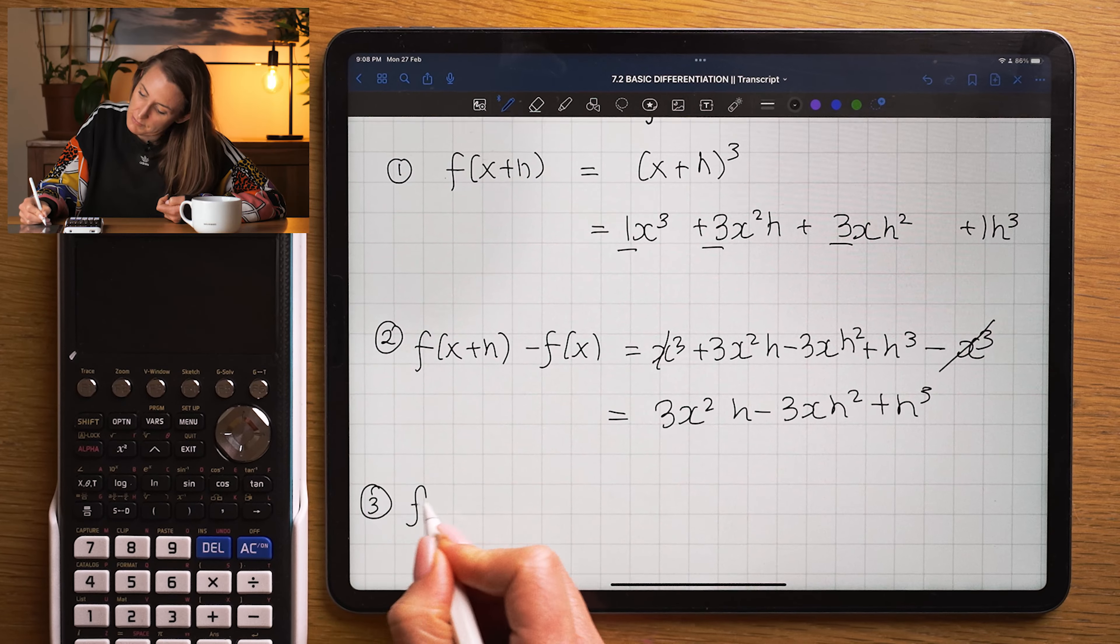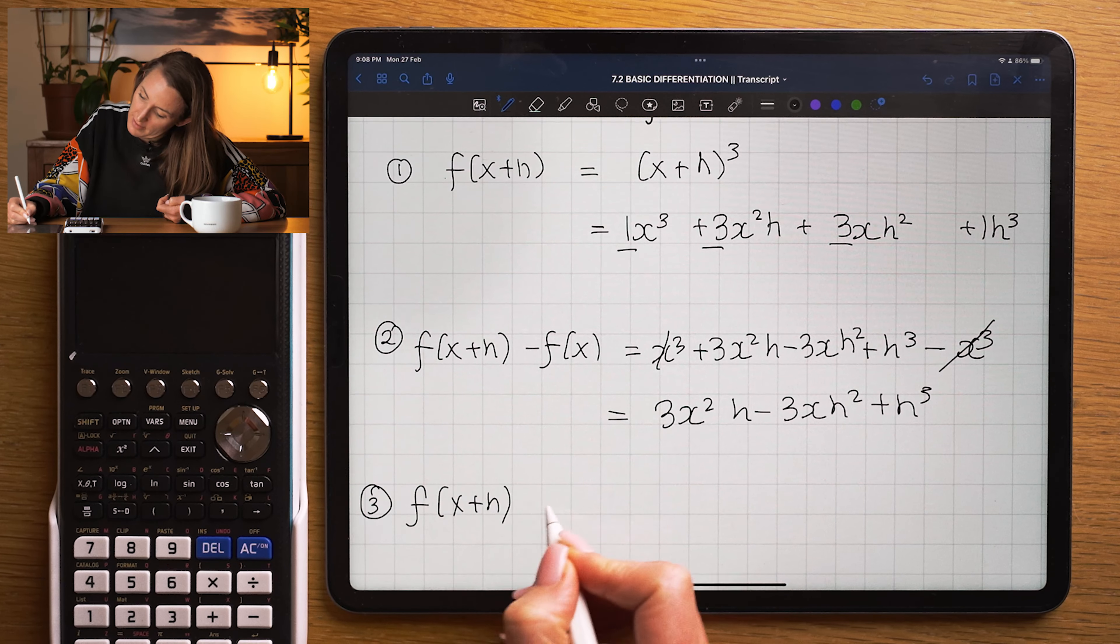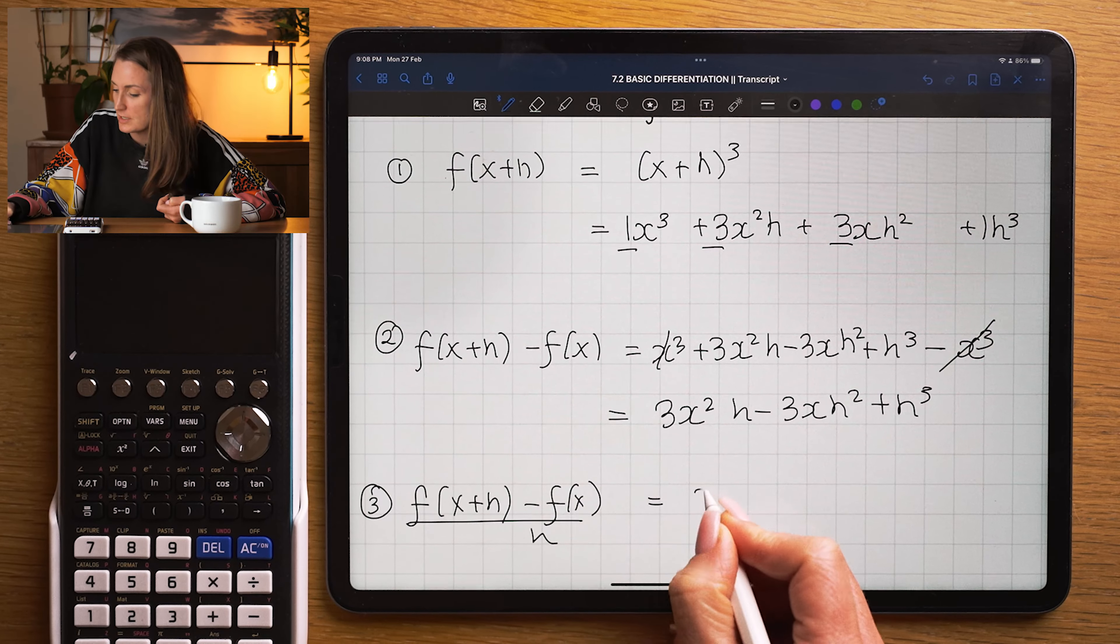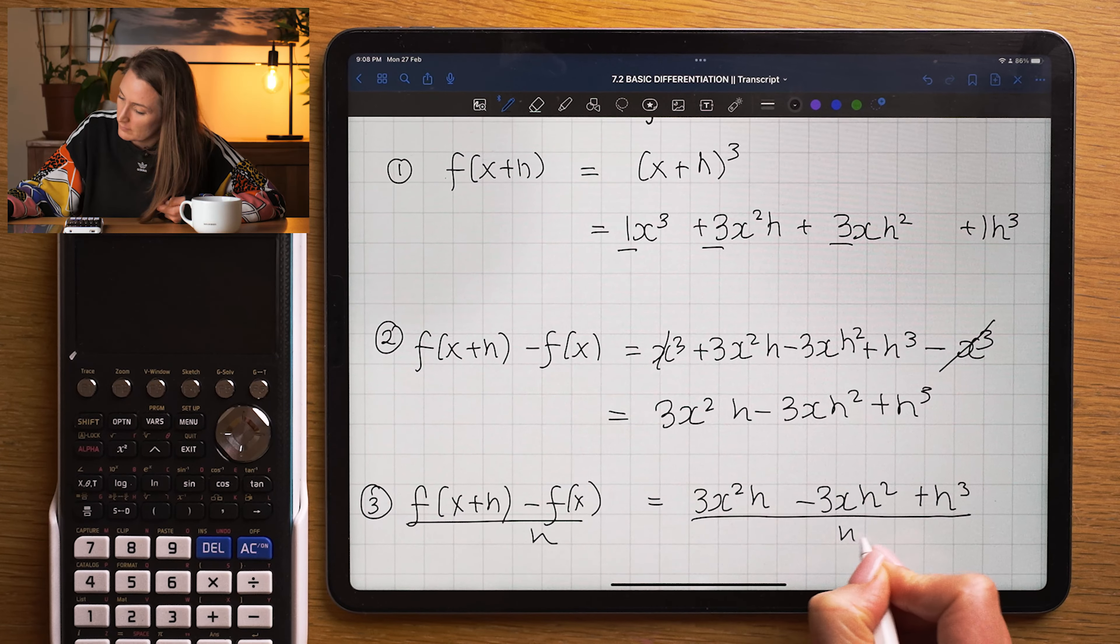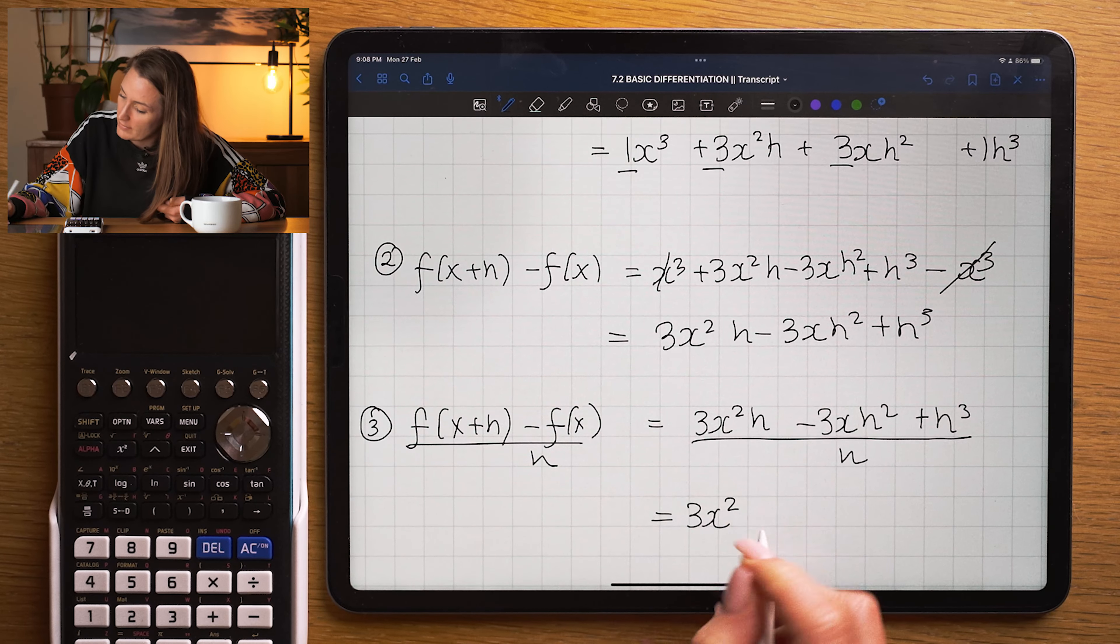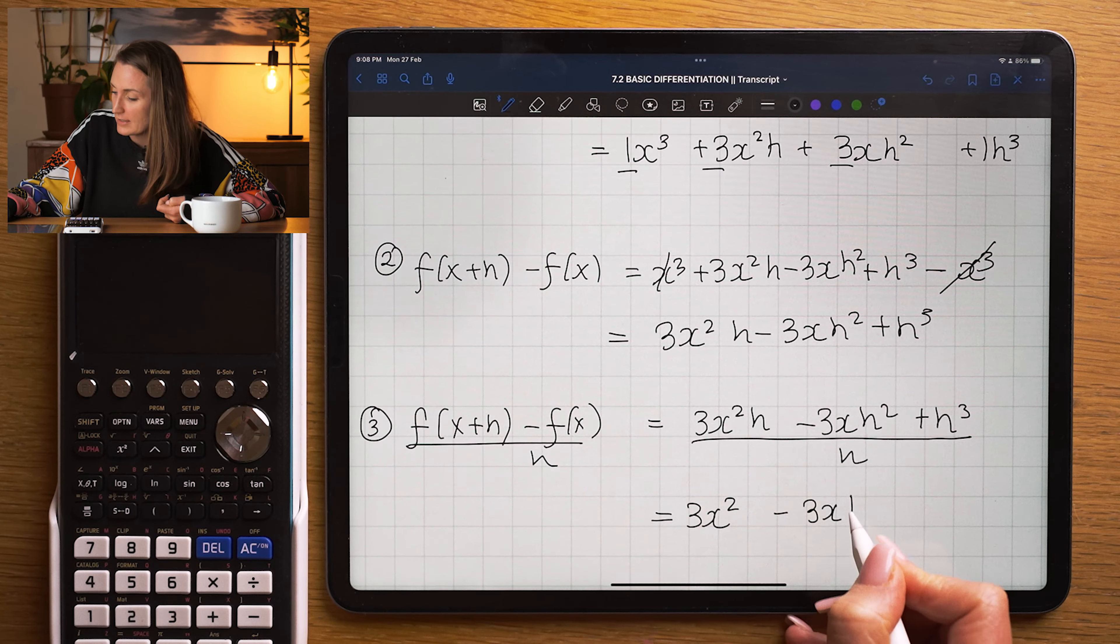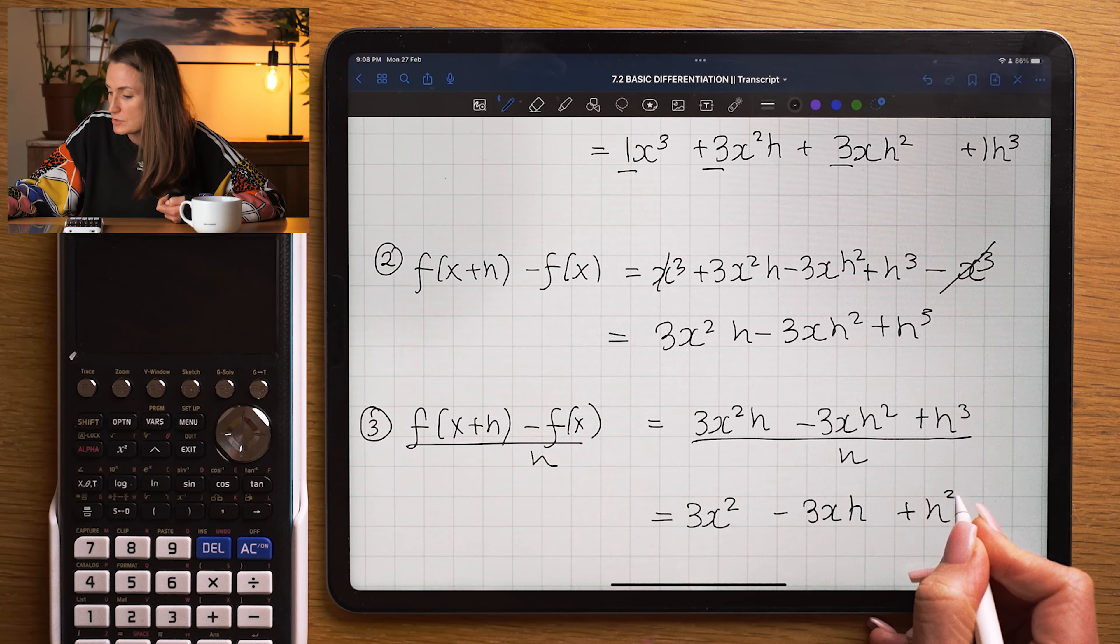I'm going to divide that expression by h, which is going to be 3x squared. That's going to be independent of h, which is important, minus 3x times by h plus h squared.